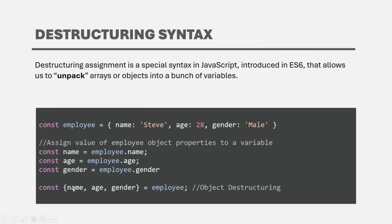For example, when I specify the variable name as name, it will be assigned with the name property of the employee object. When I create the variable age, it gets the value of the age property. And when I specify gender, the gender property value is assigned to the gender variable. In case of array destructuring, element position is used. But in object destructuring, the property names are used — the variable name must be the same as the property name whose value we want to assign.